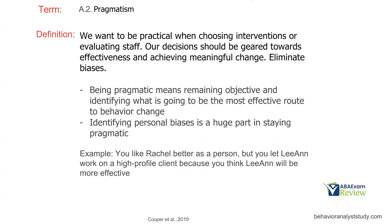Pragmatism: you want to be practical. That means putting biases, opinion, and subjectivity aside and choosing interventions, staff, or making decisions based on effectiveness — how are we going to achieve meaningful change? When choosing between different interventions, strategies, and approaches, pragmatism says you pick the intervention that will be effective. We'll discuss cost-benefit analyses and effectiveness over time, but end of the day, when you're pragmatic, you're being objective and choosing things based on effectiveness. A big part of pragmatism is identifying and eliminating personal biases.